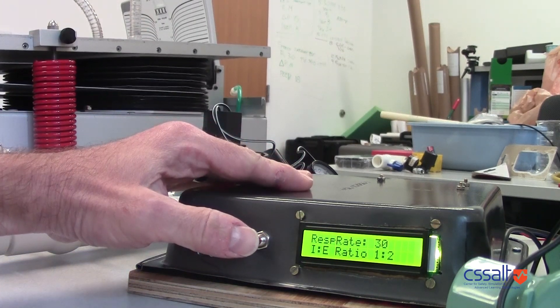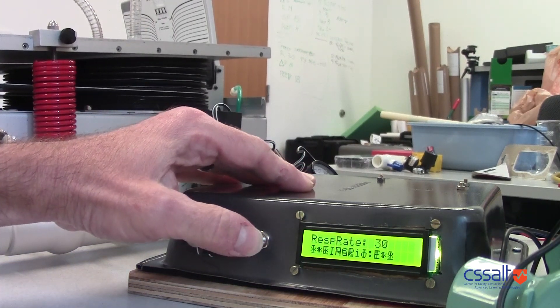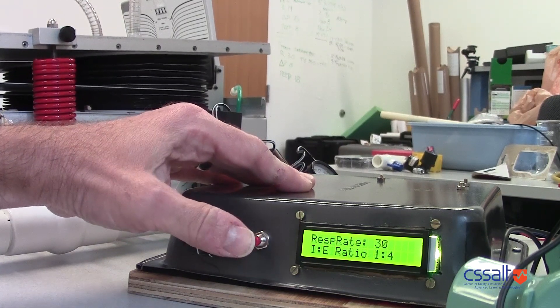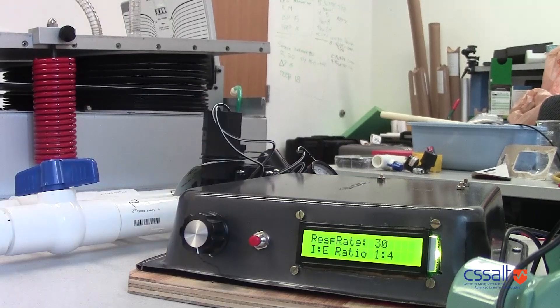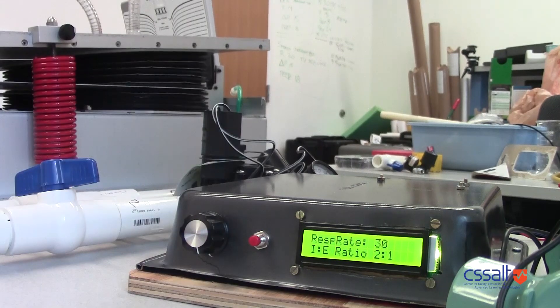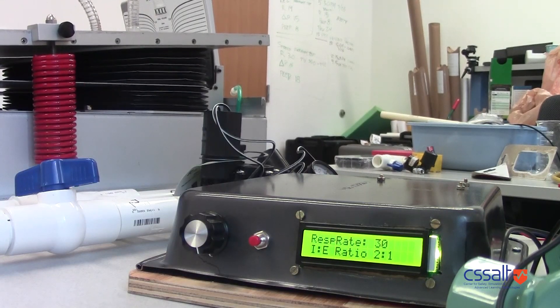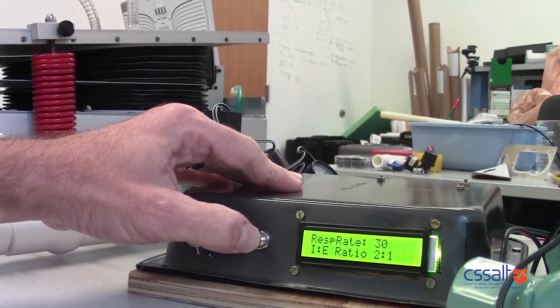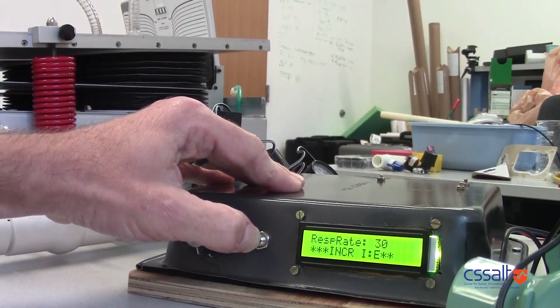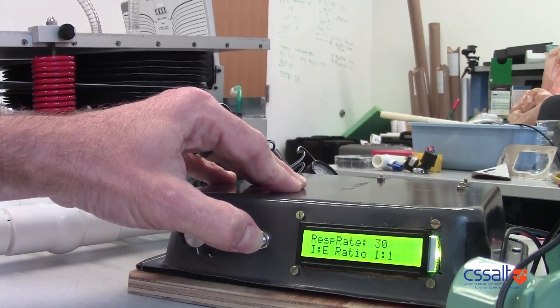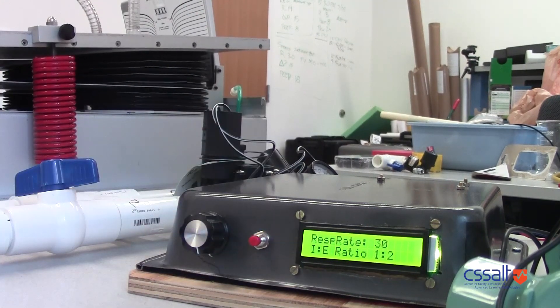Changing I to E ratio. It's currently at 1 to 2. 1 to 3. 1 to 4. Change it to 2 to 1. Back to 1 to 1. And back to 1 to 2.